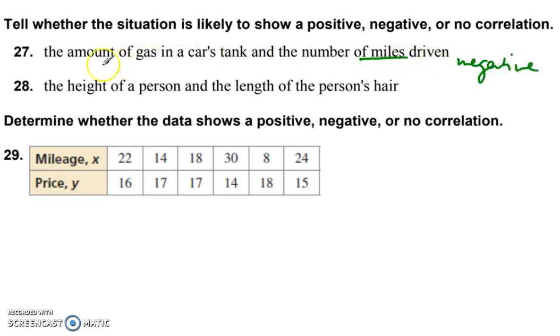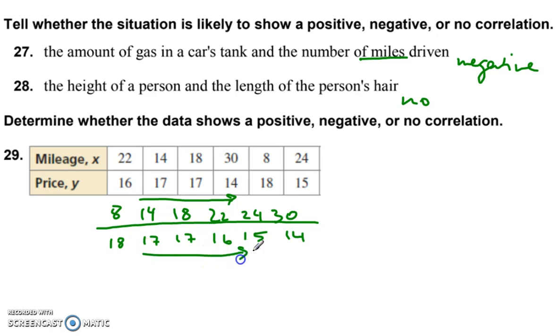Height of a person and length of their hair. No correlation. These, put them in order. Once you put them in order from least to greatest, you can see that as x increases, y decreases. So that's a negative correlation. There you have it.